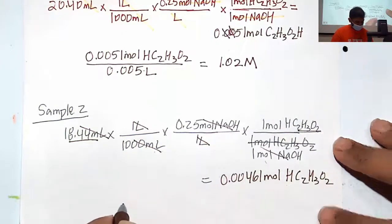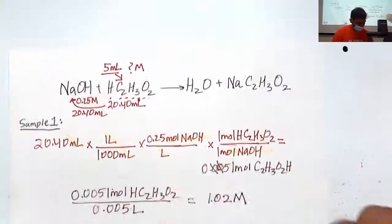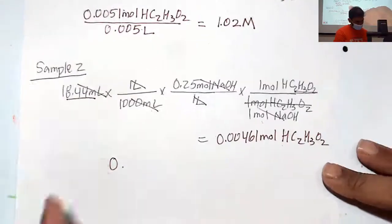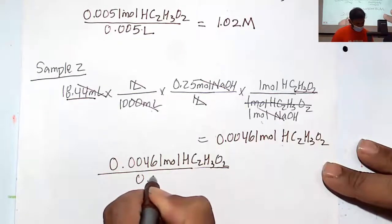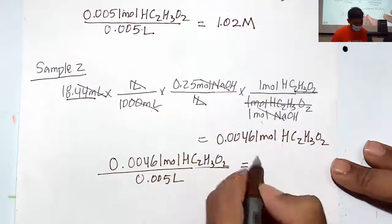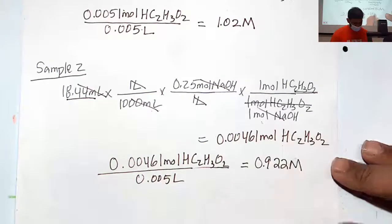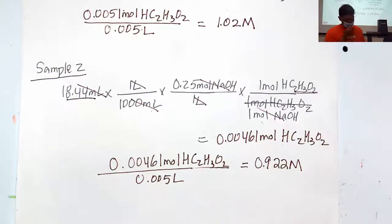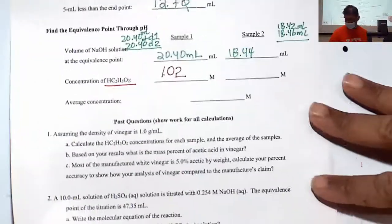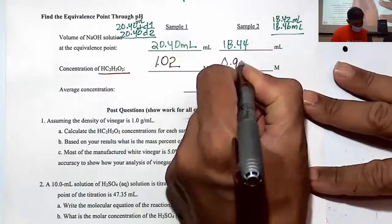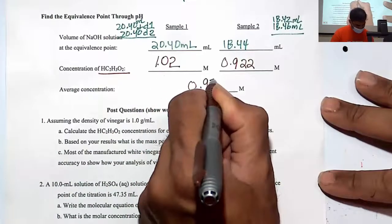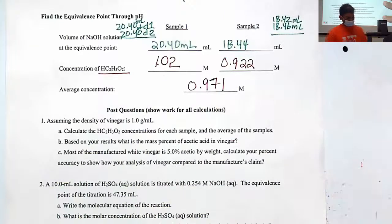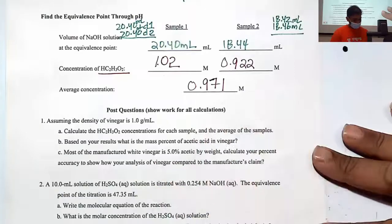To find the concentration for sample two: 0.00461 moles of acetic acid divided by 5 mL (which is 0.005 liters) gives 0.922 M. We then average the two results — 1.02 M and 0.922 M — getting an average of about 0.971 moles per liter. That is the molarity of acetic acid from our titration data.